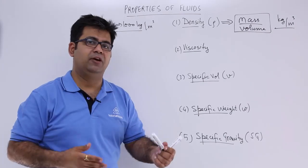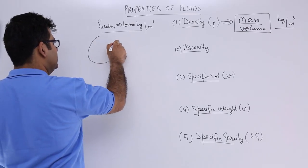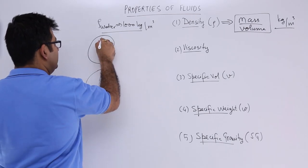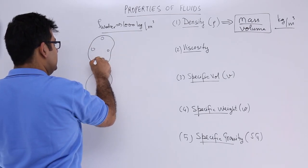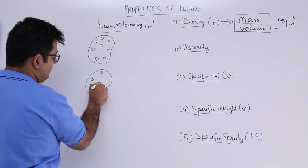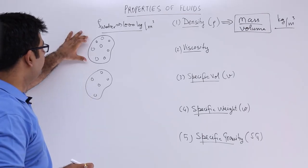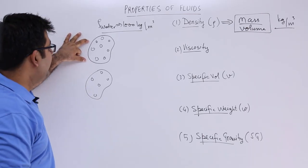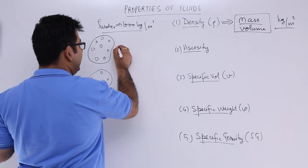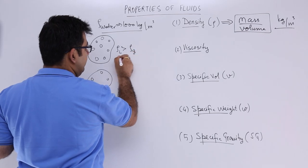You have two kinds of fluids: liquids and gases. If you talk about the molecular arrangement, this is for liquids and this is for gases. The number of molecules per unit volume of a liquid as compared to gas is higher. So this means that the density of liquid is higher than the density of a gas.